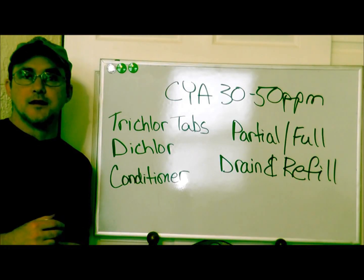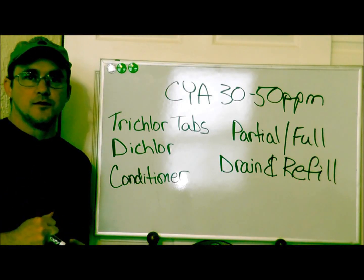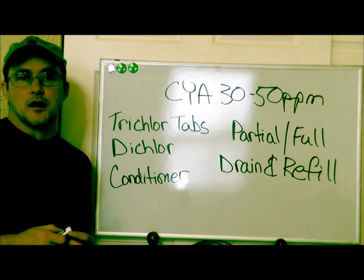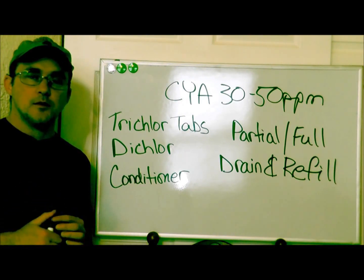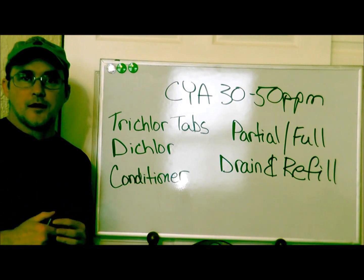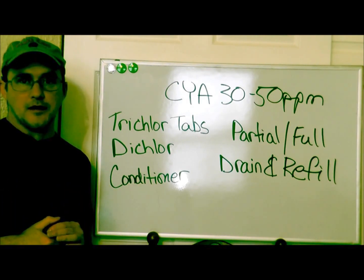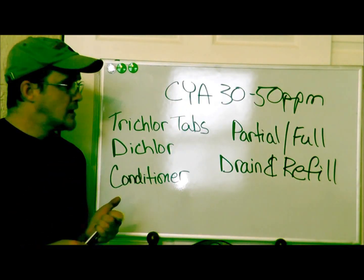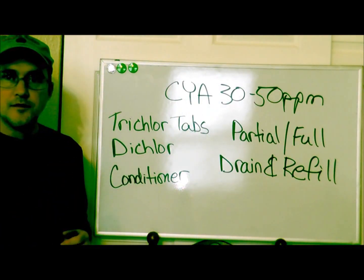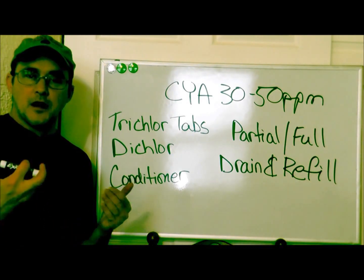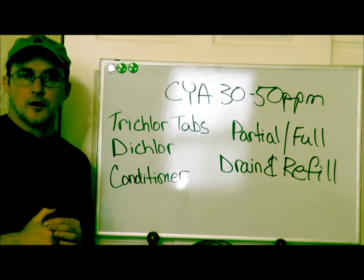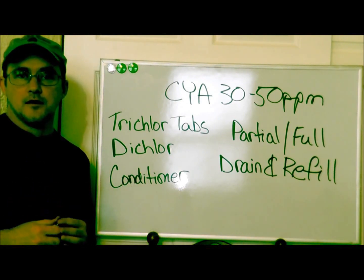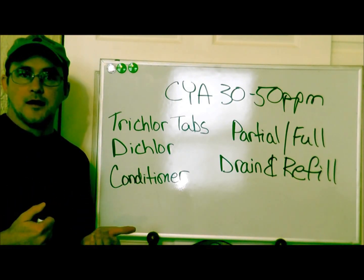Hi, once again, this is Robert with Clean Pool & Spa, and in this video I want to talk about a situation that happens to a lot of pool owners, and that is a problem with their cyanuric acid or their pool stabilizer. The cyanuric acid or stabilizer — they're all the same thing — should be between 30 to 50 parts per million. Anything lower or higher can render your chlorine less or ineffective. Let's go ahead and define what low and high is.